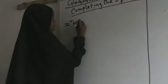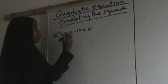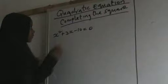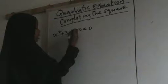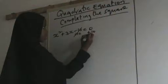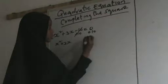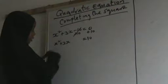So, x squared plus 2x minus 10 is equal to 0. Then I want to carry minus 10 to the other side. So, I use the inverse which is plus 10. So, I add 10 to both sides. Minus 10 and plus 10 cancel. So, which is x squared plus 3x. We leave a space. Is equals to 10. And we leave a space.